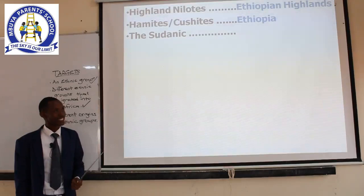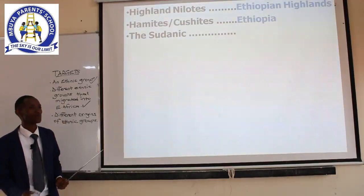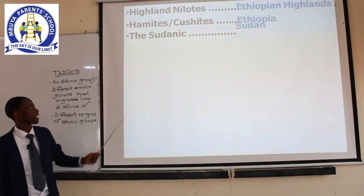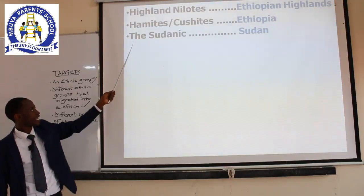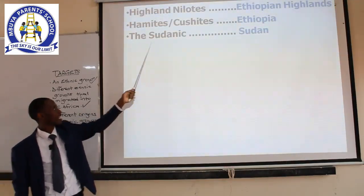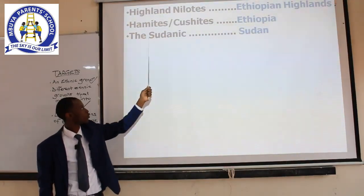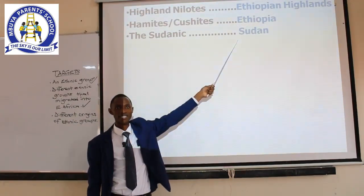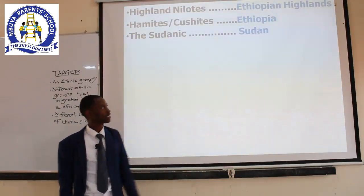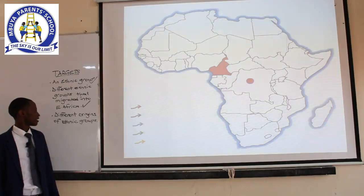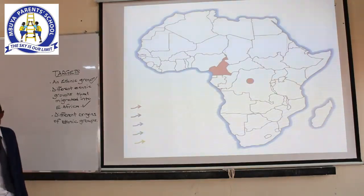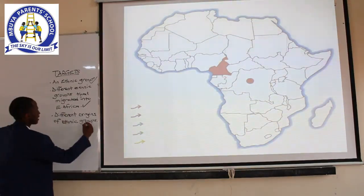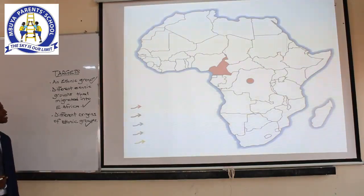The Cushites, or the ones we call Hamites, migrated from Ethiopia — specifically from highland areas of Ethiopia. Now lastly, the Sudanic people: where did they come from? These people carried the name Sudanic, so they migrated from Sudan. With that, we have finished the last target — the different origins of the ethnic groups.